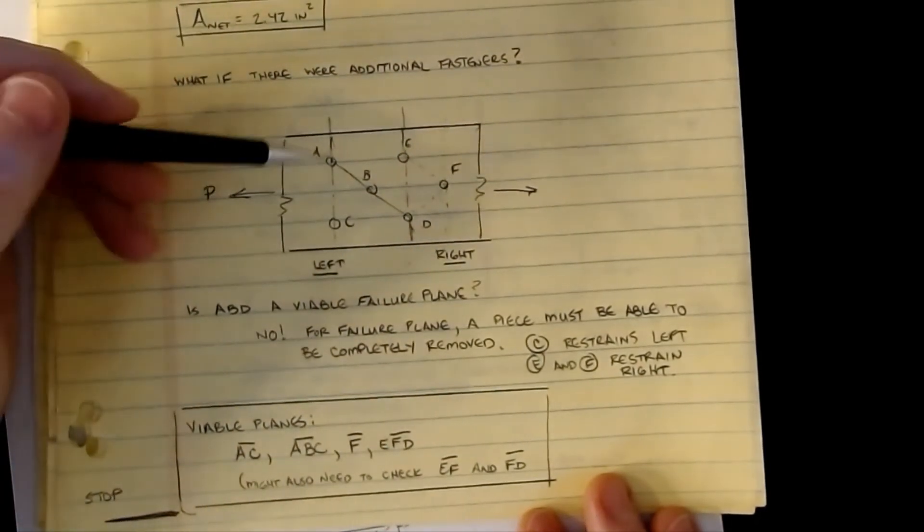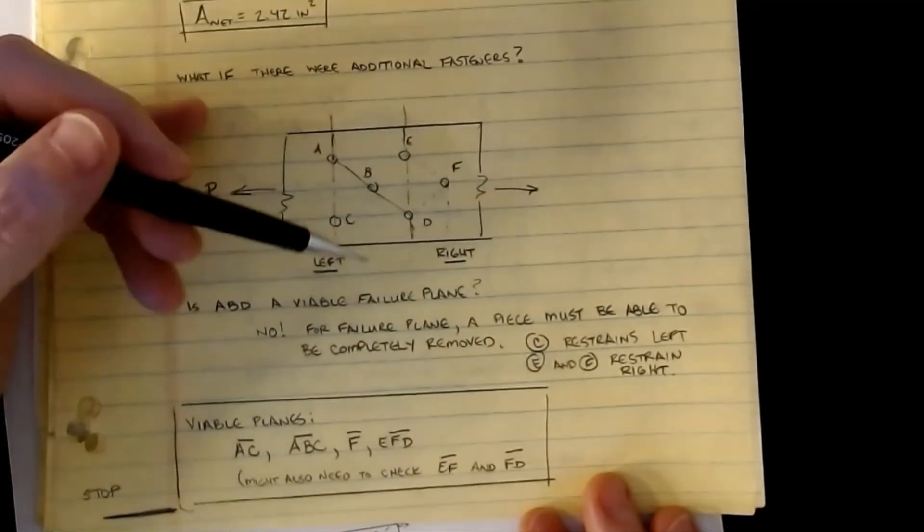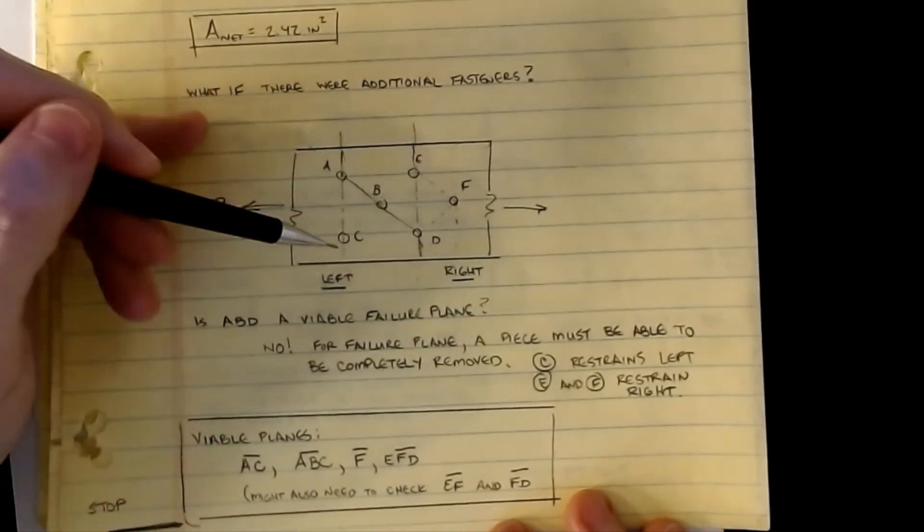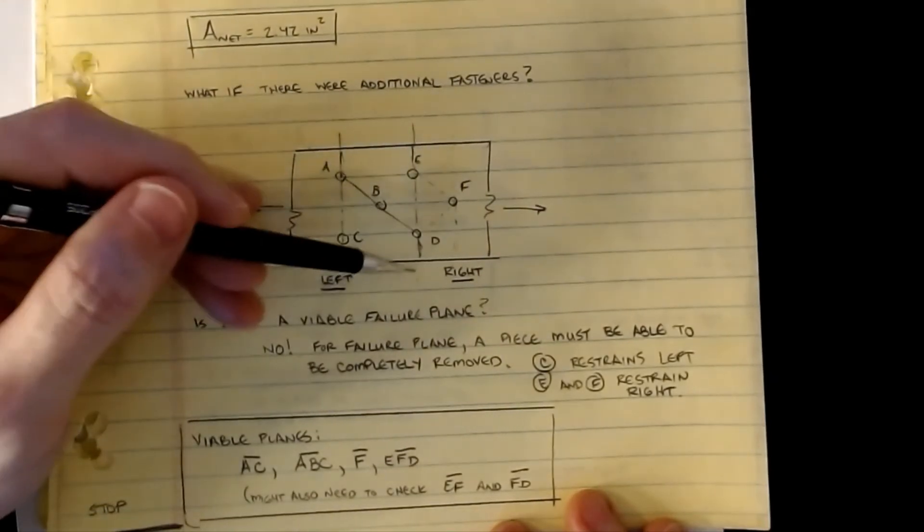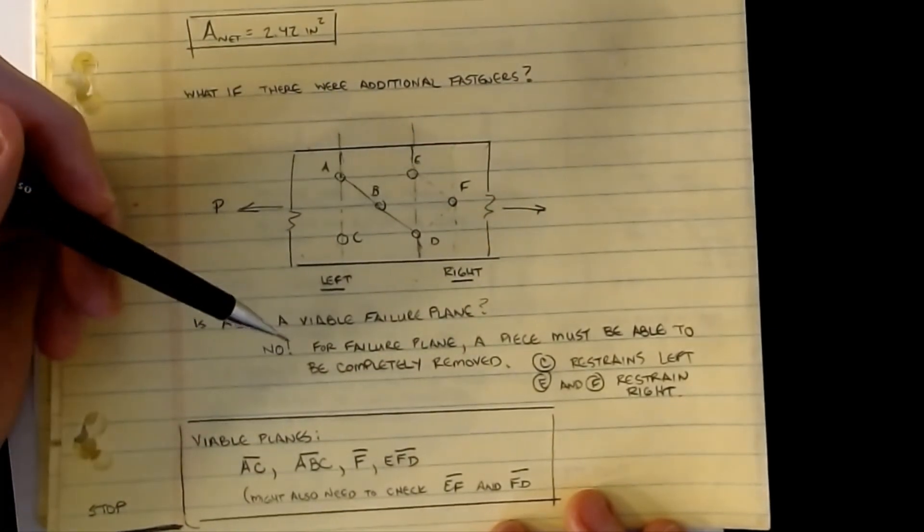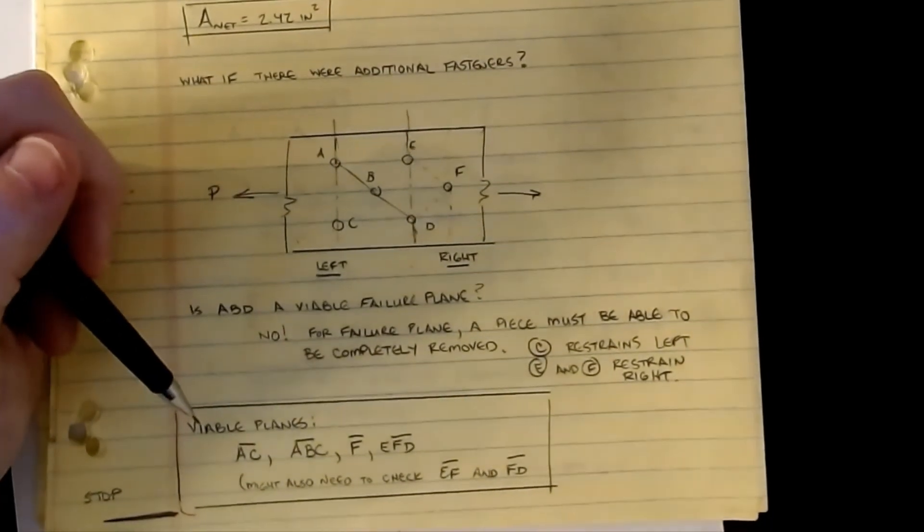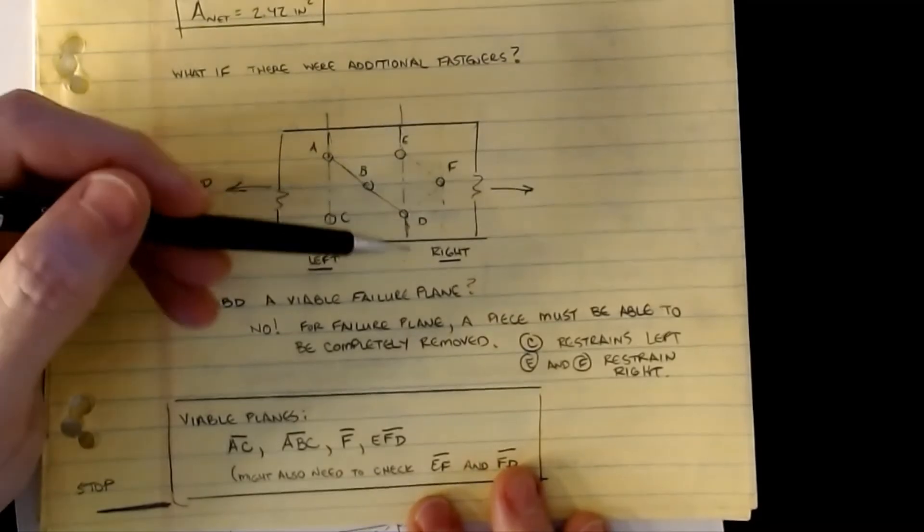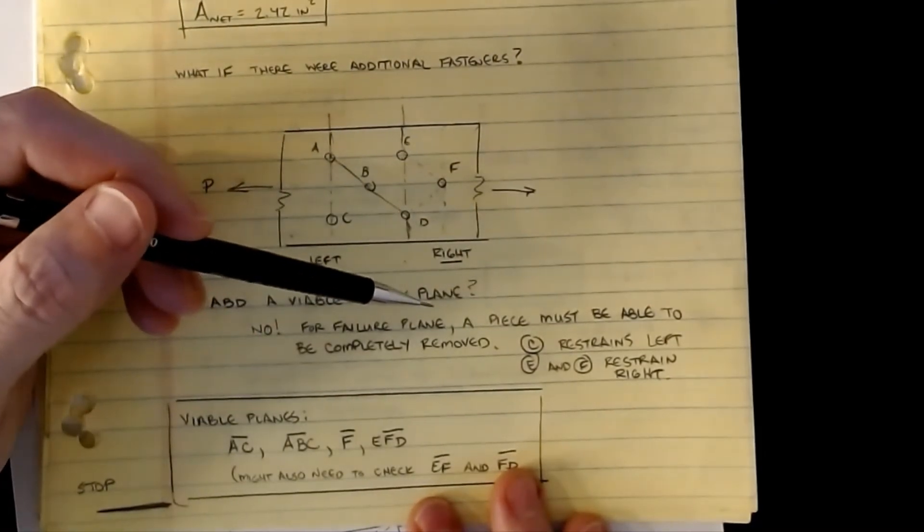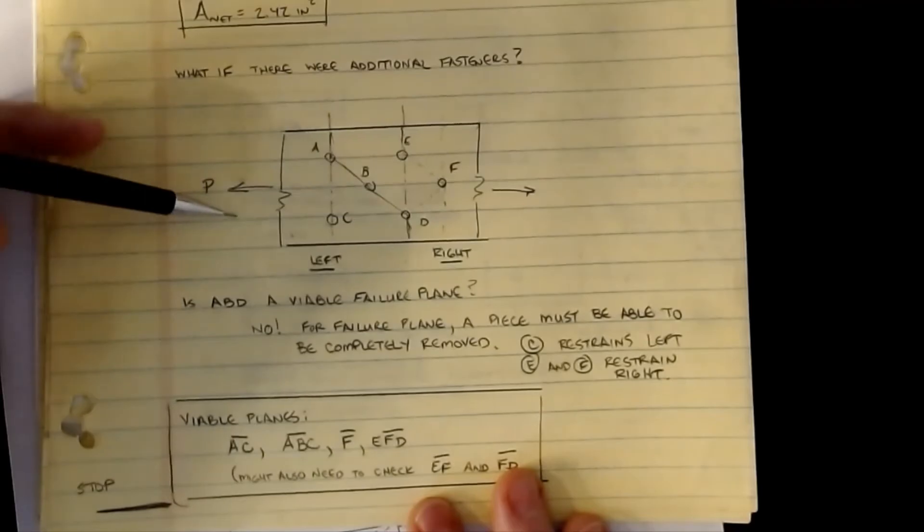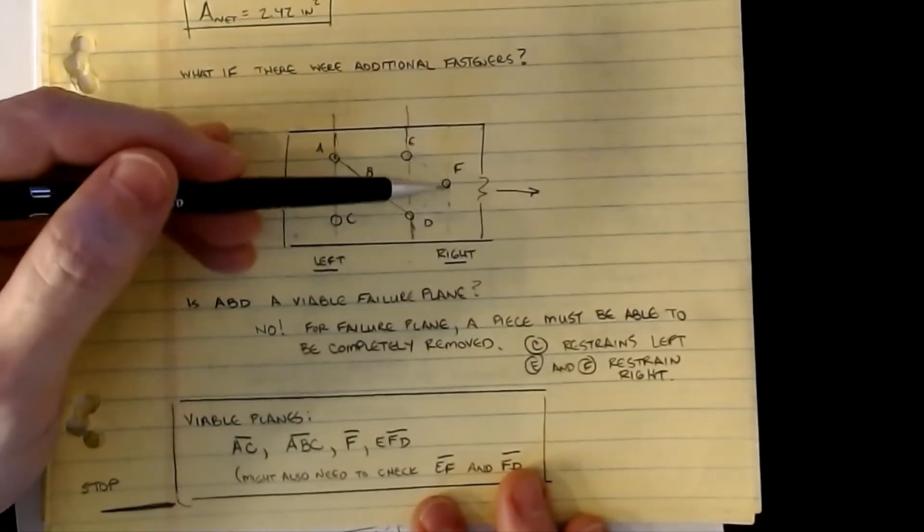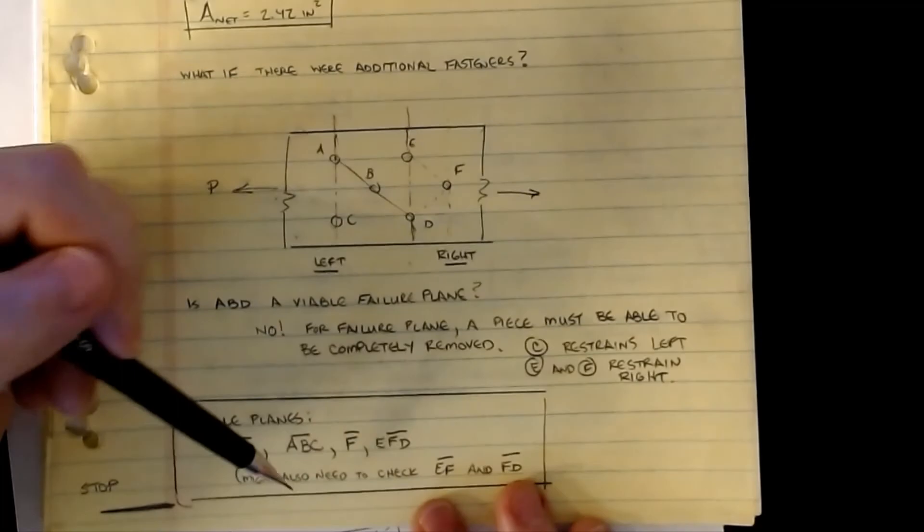The question is, is ABD a valid plane in this one? And the answer is no, because I have these two guys adding on this side and C on the other. This plane is not one that would likely be the one to occur. For this plane to develop, I would have to break a couple of bolts to break this thing free, and we're assuming that's not going to be the case. The note here: for a failure plane, a piece must be able to be completely removed. Bolt C restrains the left side and bolts E and F restrain the right, so ABD is not a pattern. It's generally a pattern that goes around the boundary and then has some sort of shortcut possibility.